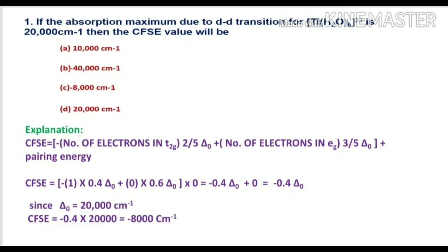One electron is present in the T2g orbital and no electron is in the Eg orbital. So the CFSE value will be minus 1 × 0.4ΔO plus 0 × 0.6ΔO. There is no pairing taking place as water is a weak field ligand. So we get minus 0.4ΔO. Since ΔO is given as 20,000 per centimeter, the CFSE = minus 0.4 × 20,000 = minus 8,000 per centimeter.